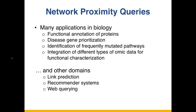These information flow-based algorithms have been used extensively in biology, though almost always by downloading data in bulk and developing custom code, rather than running database queries. They have also found applications in link prediction, recommender systems, and of course web ranking — which is where the name PageRank comes from.